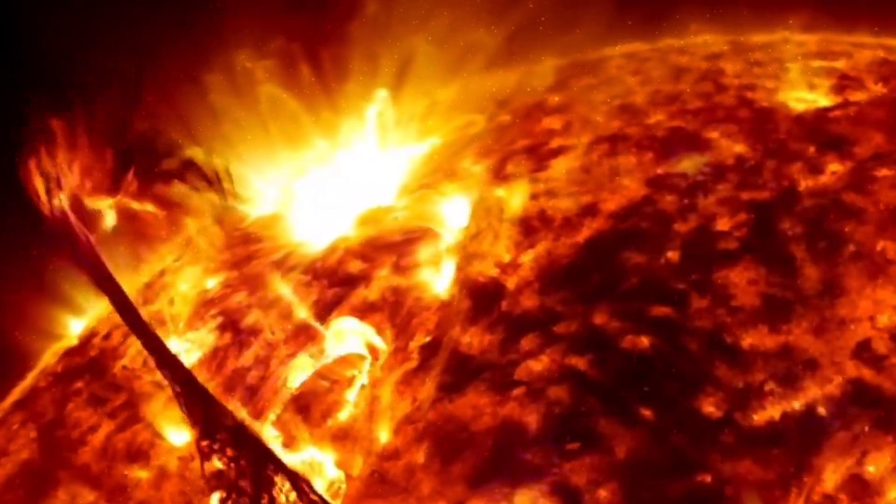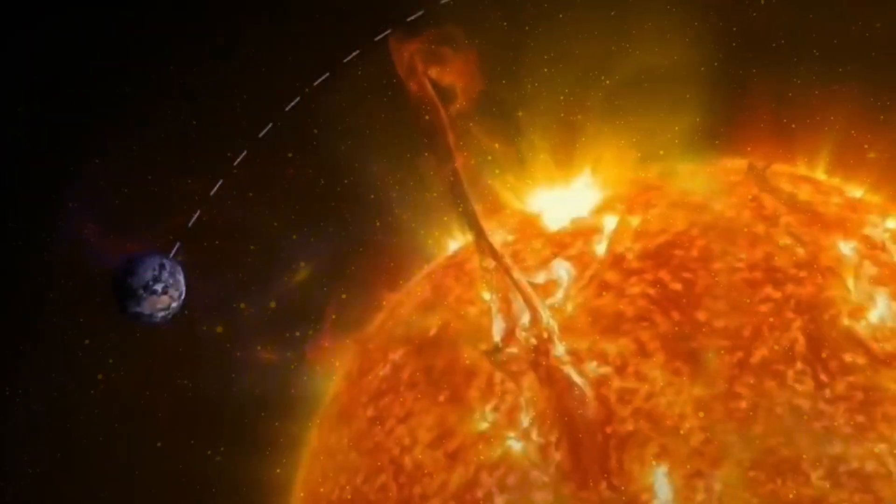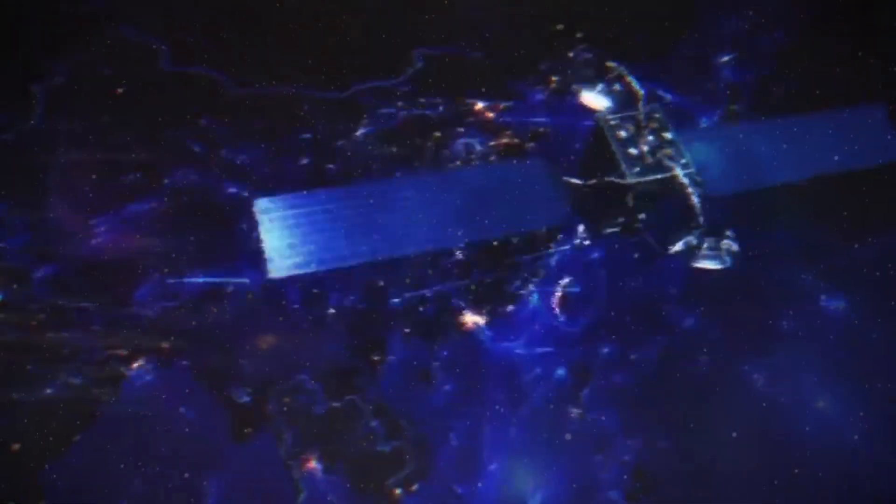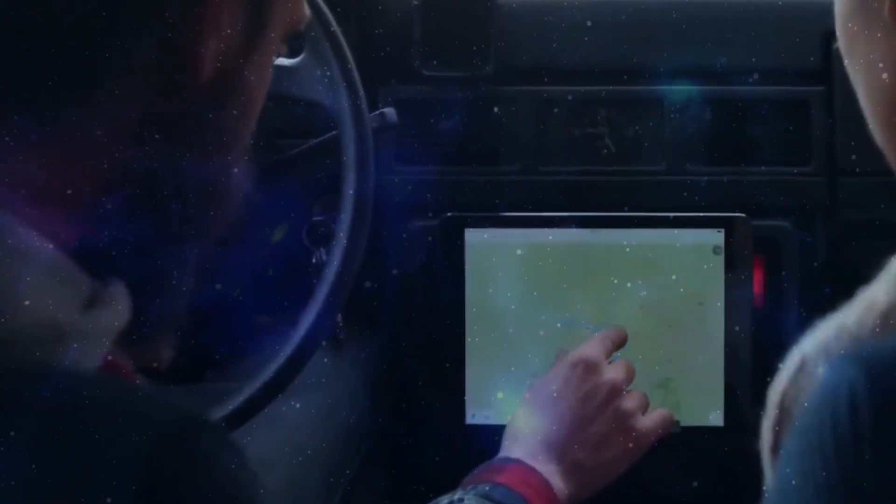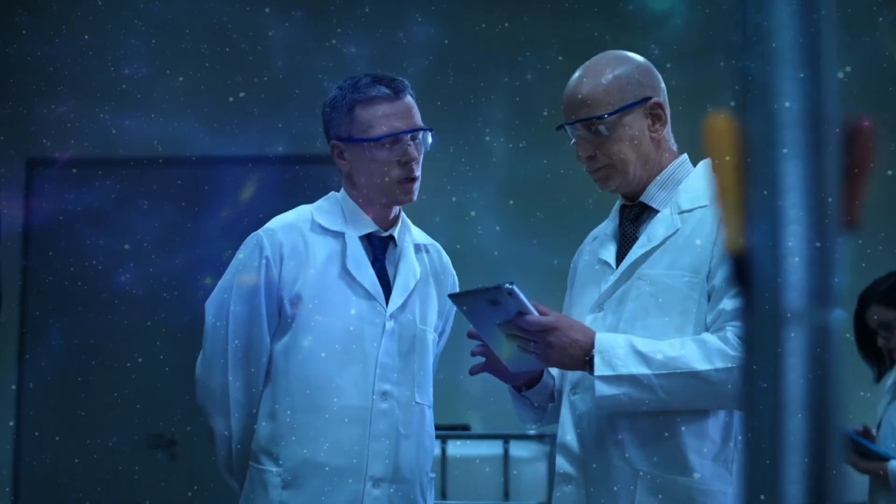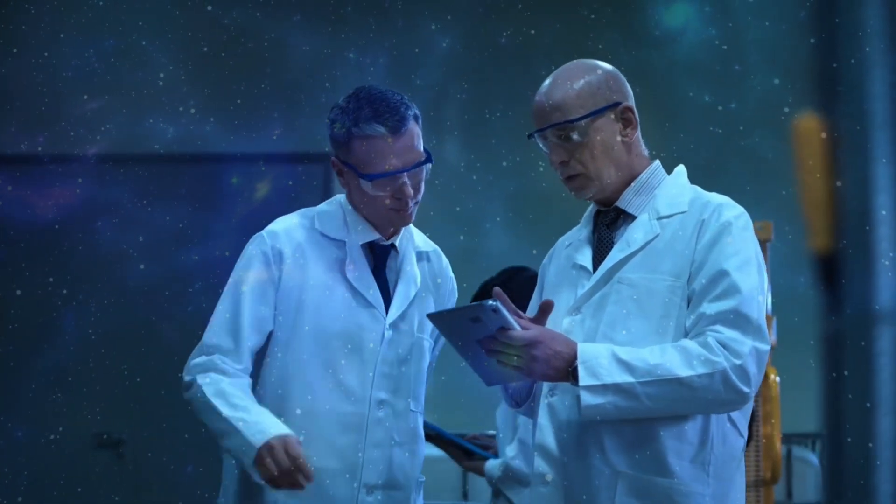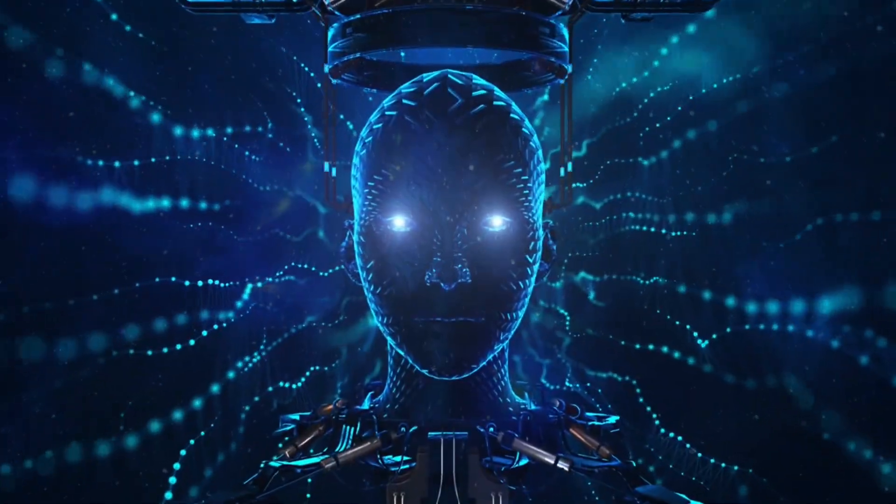When these solar particles collide with Earth's magnetic field, they create those stunning auroras, the northern and southern lights. But it's not all about pretty lights. A strong solar storm could mean trouble for satellites, power grids, and communication networks. Think of it as the sun accidentally sending a shockwave that scrambles our tech.